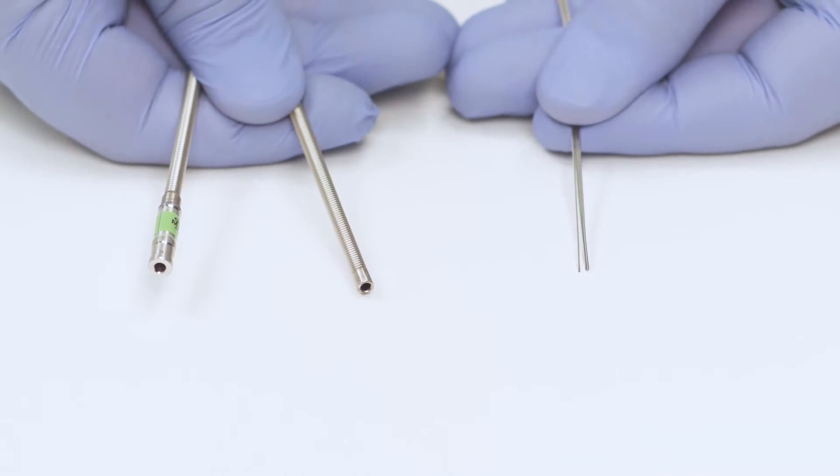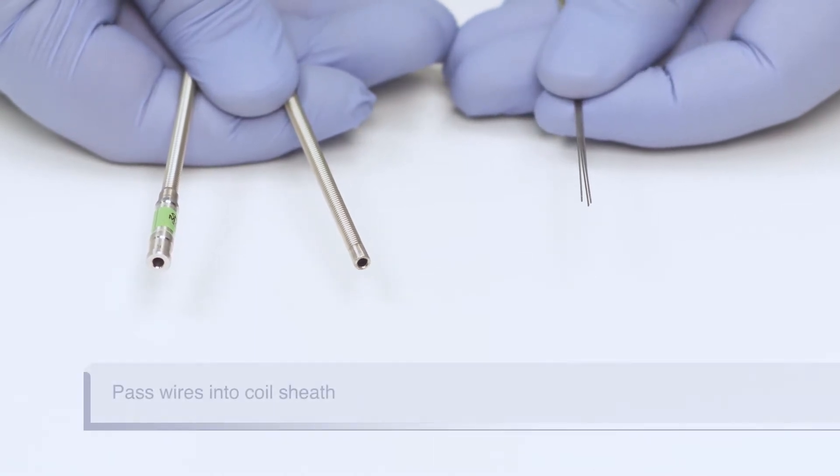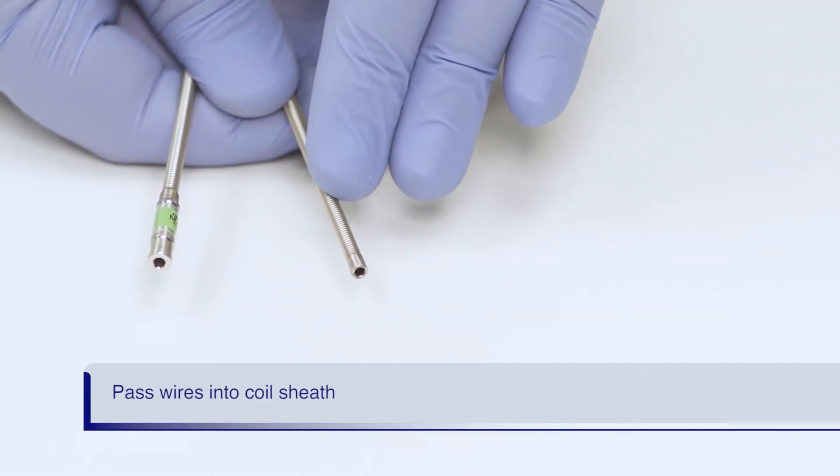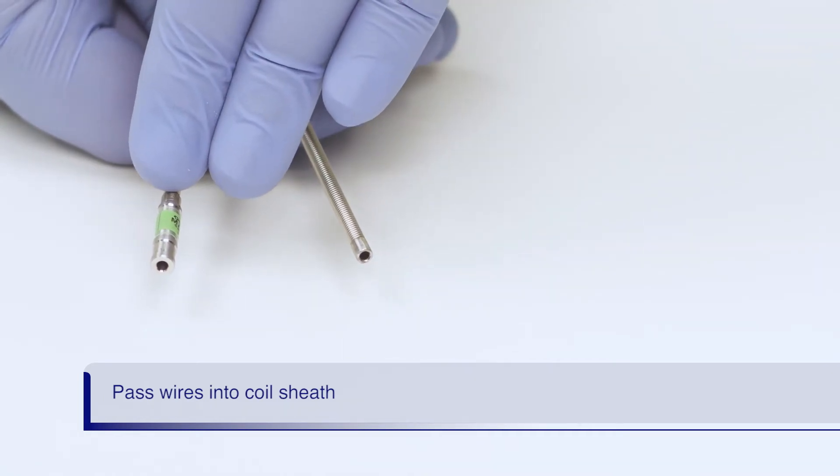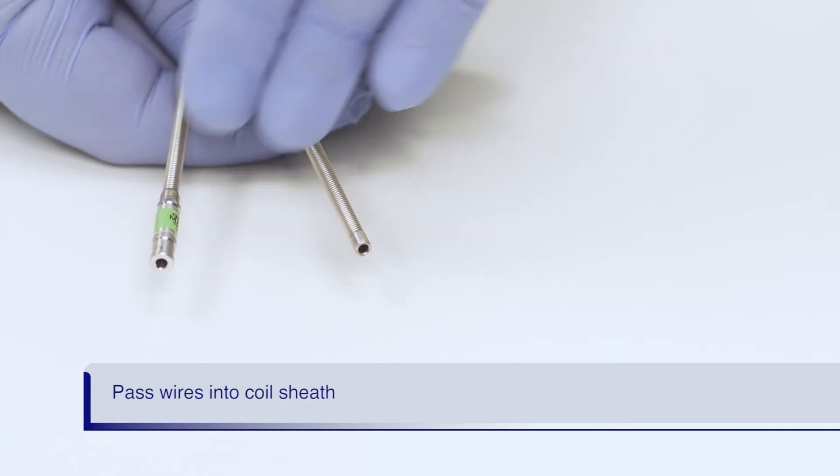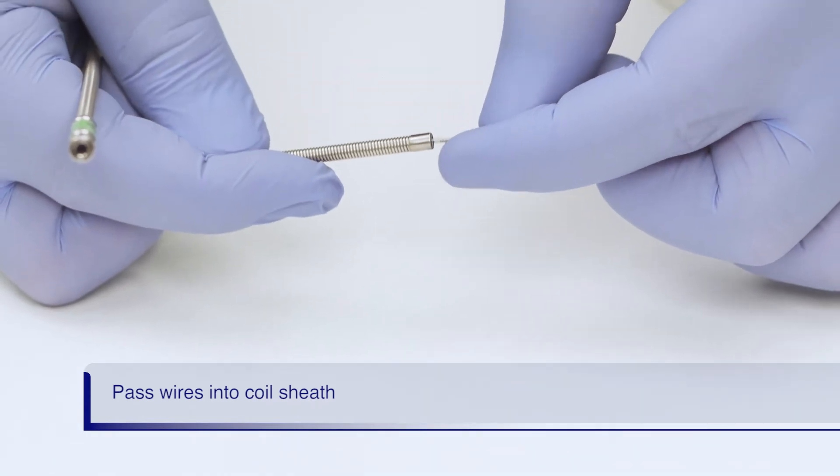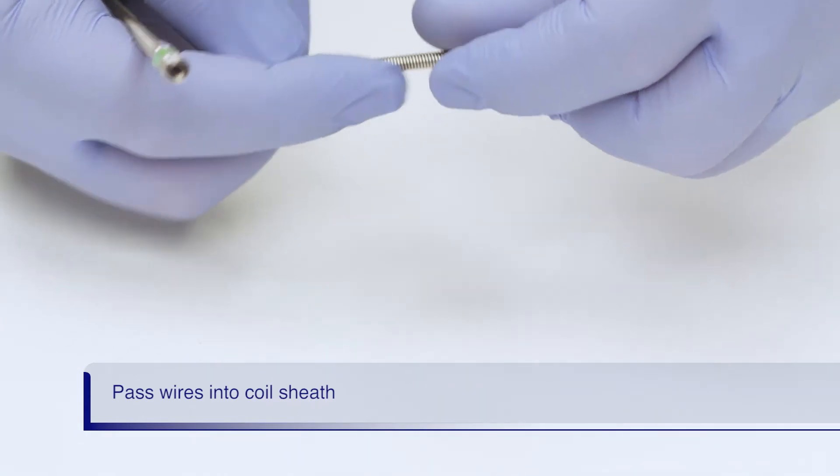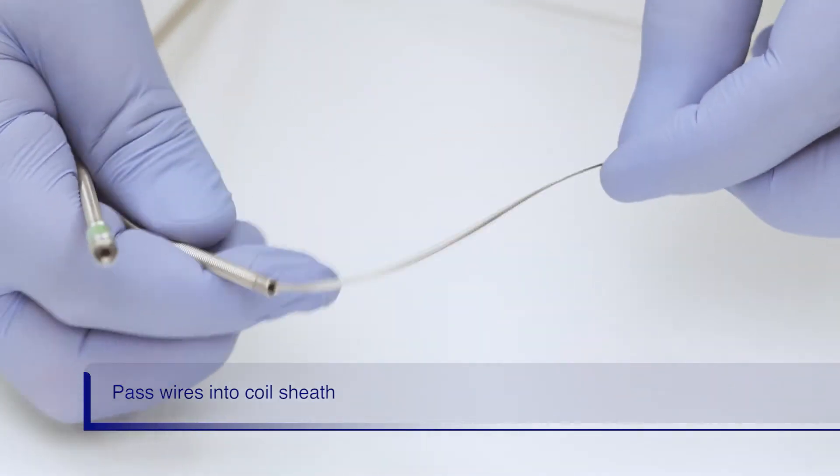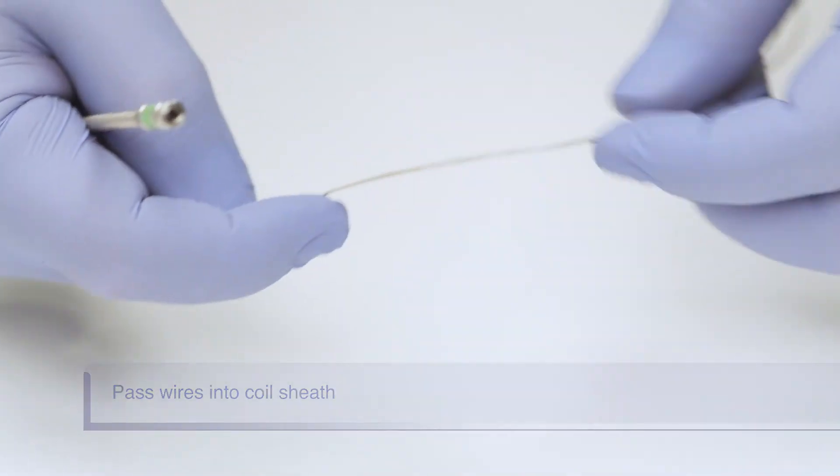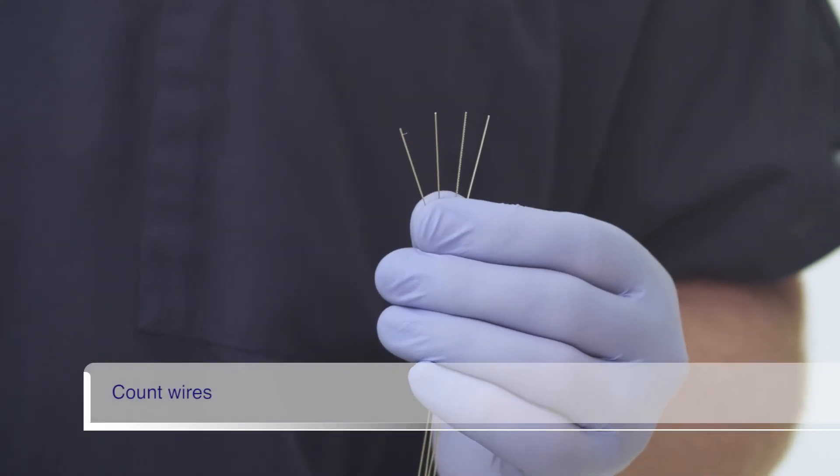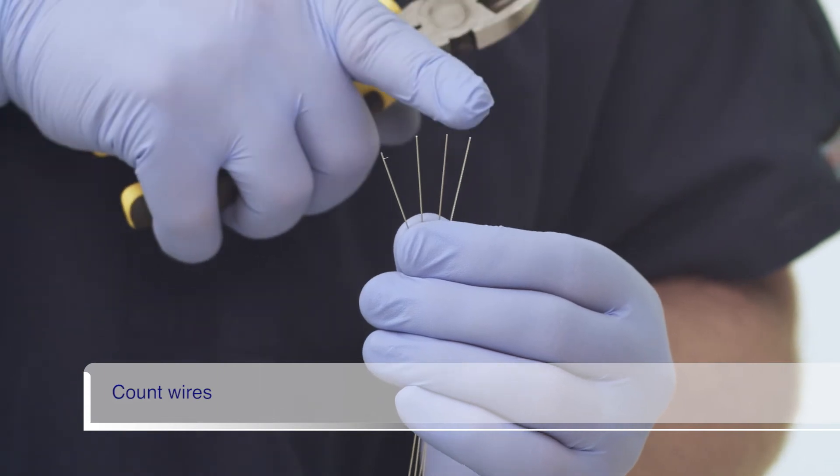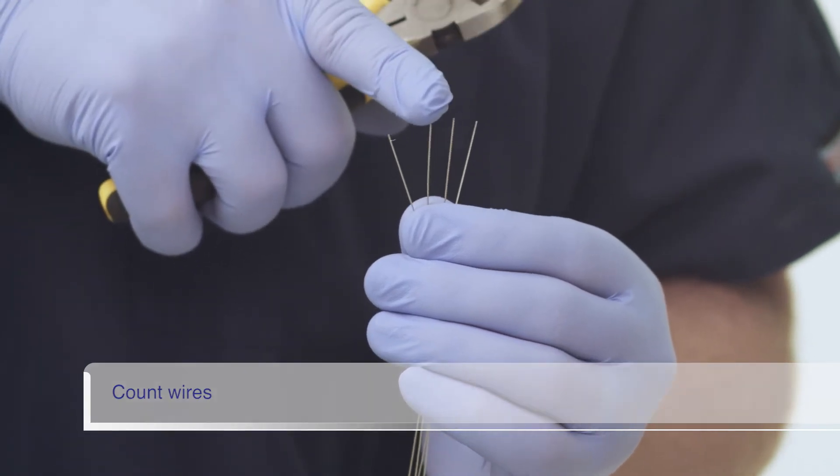The wires are now loaded into the coiled sheath. The wires are advanced through the unmarked, distal end of the sheath. The end with the green band is the proximal end and is connected to the handle later on. Ensure you keep the wires straight and together as you advance them through the sheath. Once the wires emerge from the proximal end of the coil sheath, count them to ensure all four wires are present.